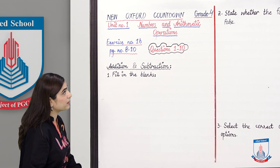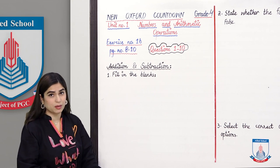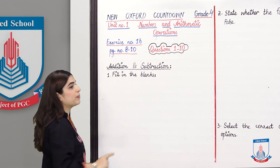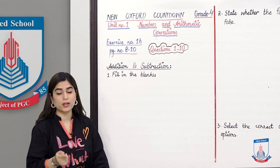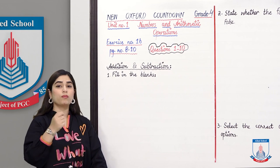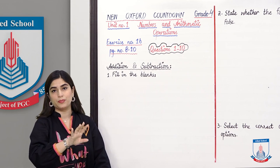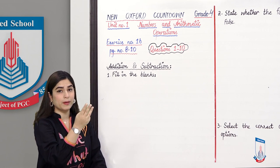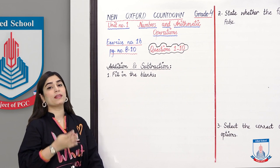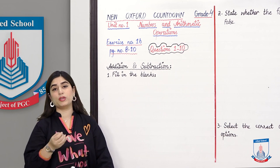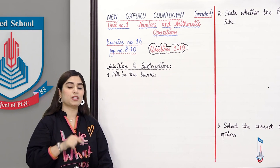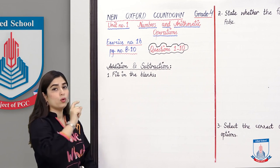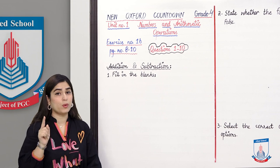Today we have to talk about Mathematical and Arithmetical operations — Addition and Subtraction. We know that Mathematical or Arithmetical operations, which we call the Basic 4, are: Addition, Subtraction, Multiplication and Division. We have to talk about the numbers that we studied in Exercise 1A.